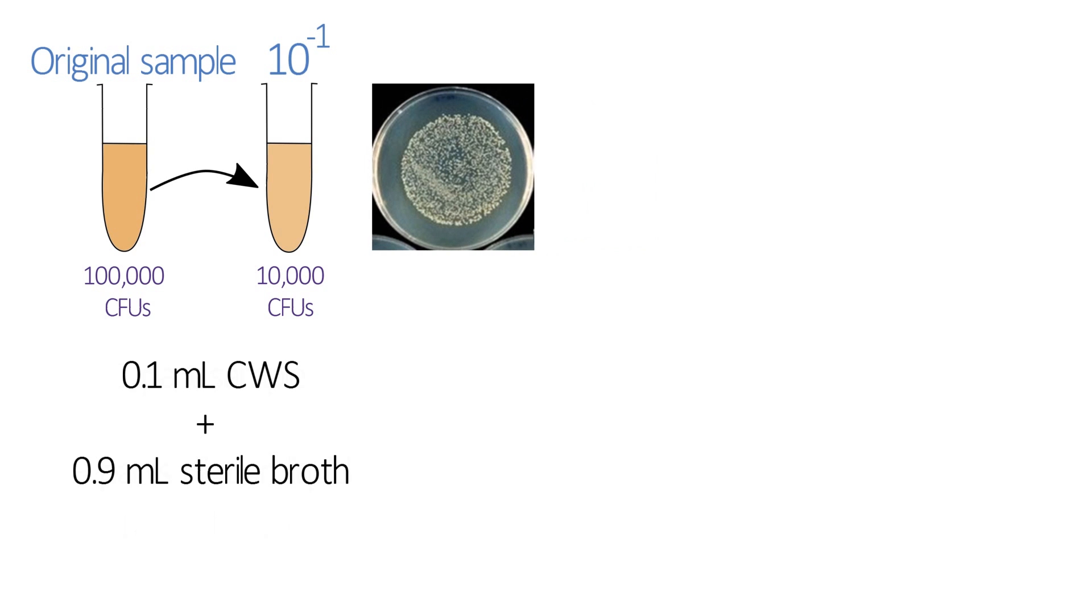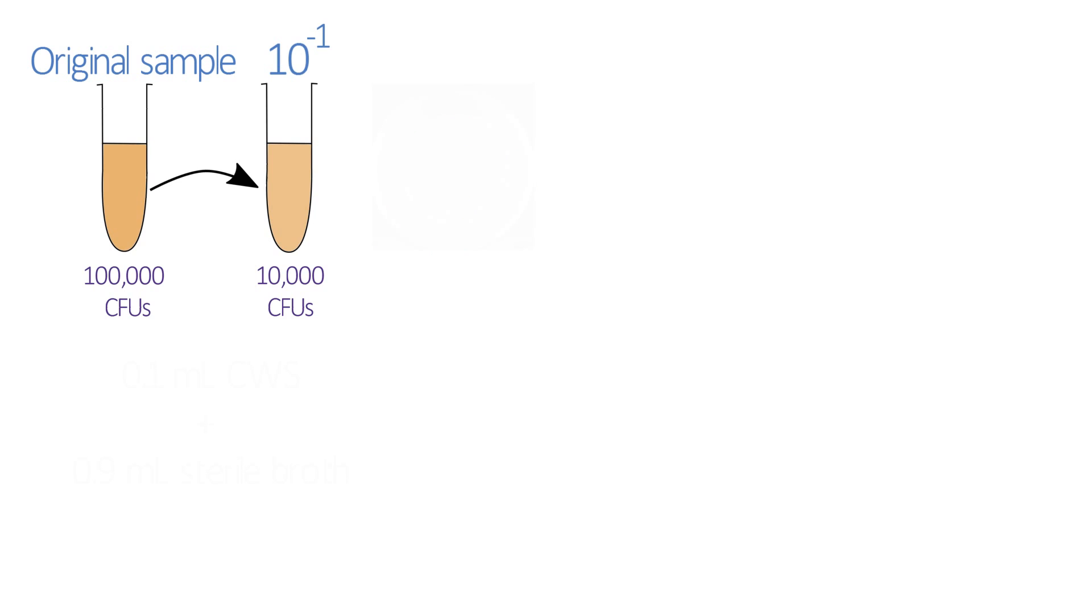However, if we plate this dilution out, we might still have too many colonies to count, so we're going to have to set up another dilution. The easiest way to do this is to do exactly the same thing again, but this time to dilute the ten to the minus one dilution by tenfold to give a ten to the minus two dilution.